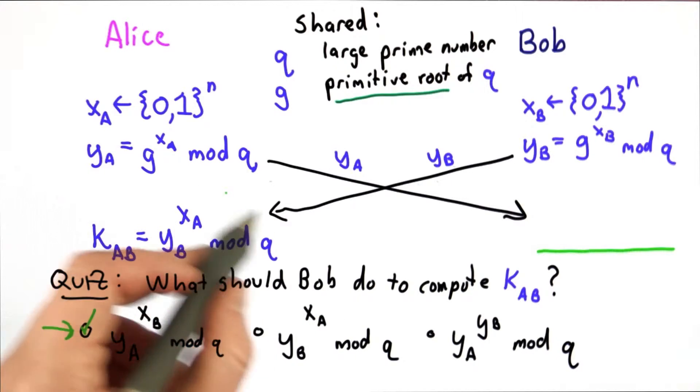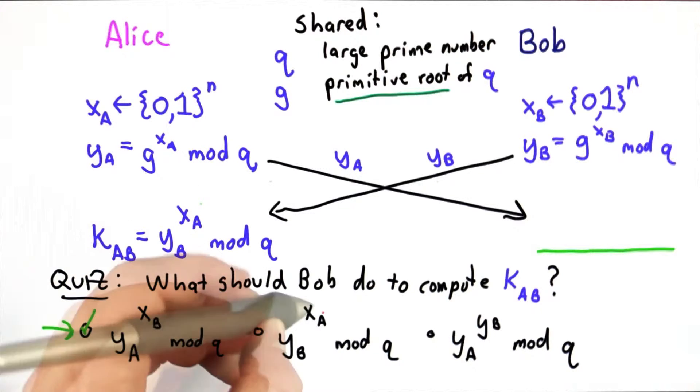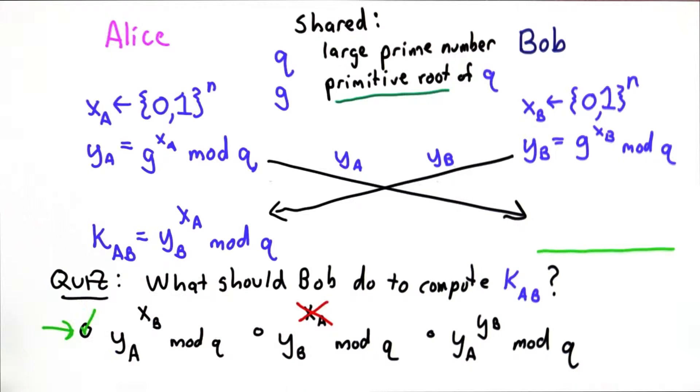The second one would compute the same thing. This is in fact exactly what Alice computed, but Bob can't do this because he doesn't know xA. The third one wouldn't compute the same key.